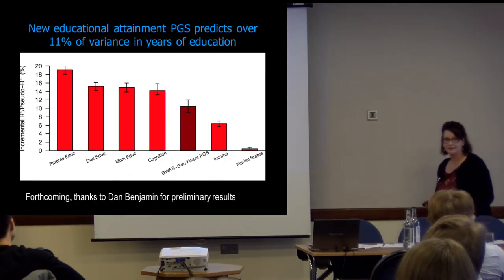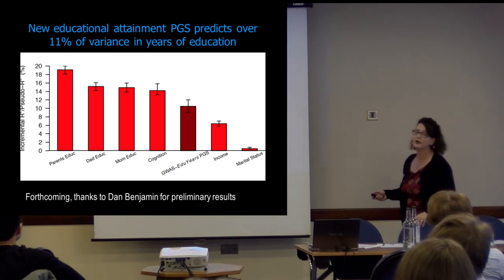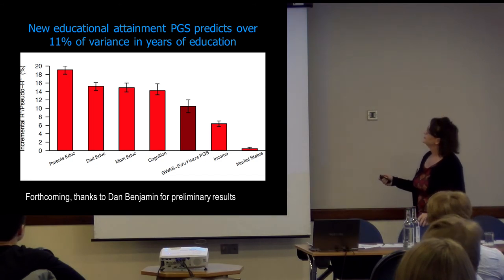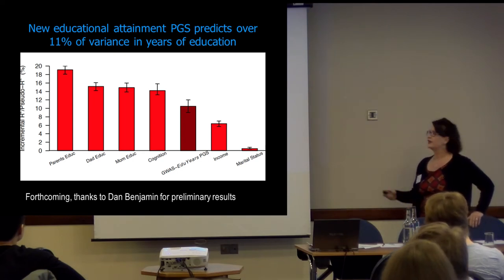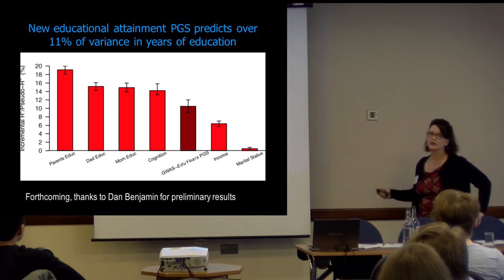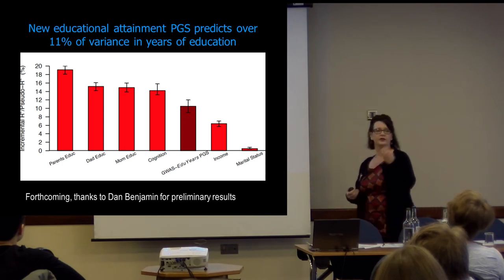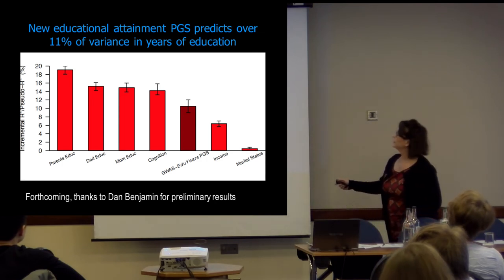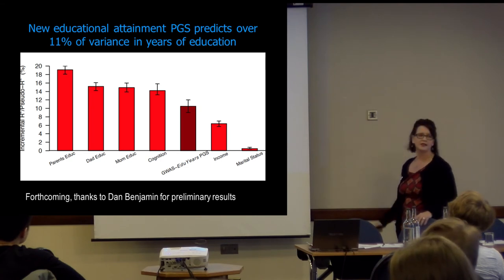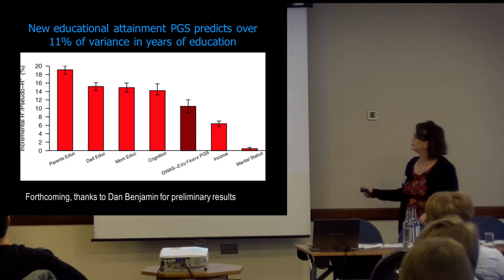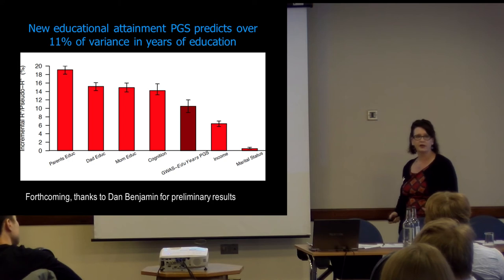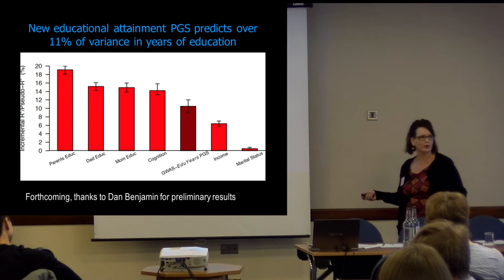If we compare the polygenic score to our usual suspects in models — things like parents' education, your dad and mom's education, your cognitive ability — it has a fairly high predictive power. So we may have been ignoring some important factors. We wanted to see what the predictive power was of our genetic scores across all these different countries and cohorts — and I'll speed up a bit to tell you why it's interesting to look across countries and cohorts.